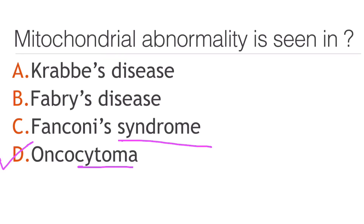Mitochondrial abnormality is seen in: Krabbe's disease, Fabry's disease, Fanconi syndrome, or oncocytoma? The answer is oncocytoma. Hope you liked this video — I'll be coming up with similar videos. Thank you.